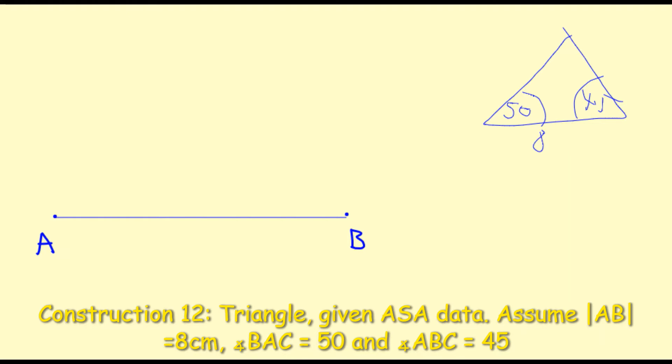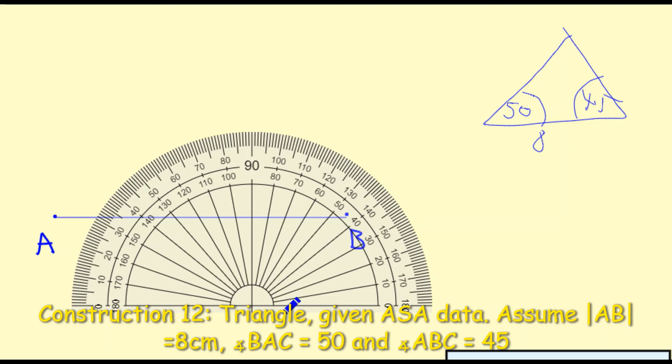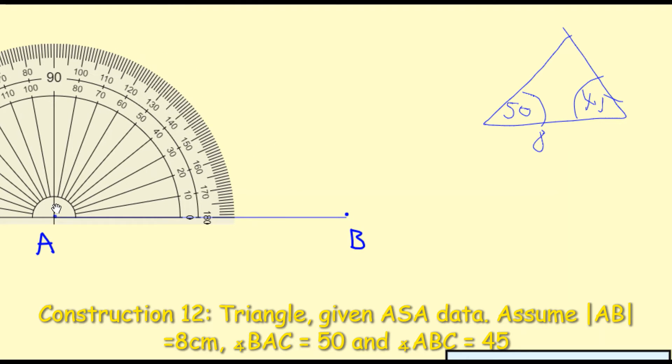This construction isn't too hard. Basically all you need is to use your protractor on two occasions to get the 50 degrees and the 45 degrees. So taking your protractor we are going to set up the angle of 50 degrees first of all. I'm going to move my protractor over to the point A and make sure that the dot crosses with the cross that's on your protractor.